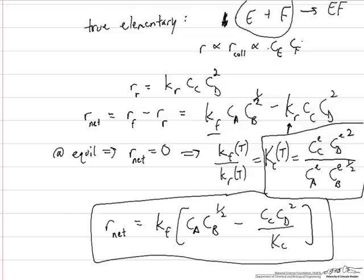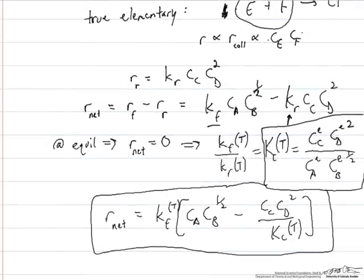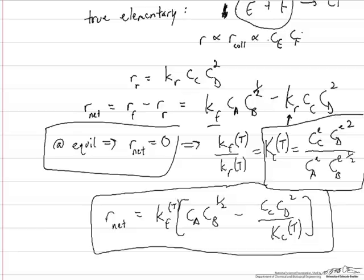One important feature of this expression is that the net rate of reaction goes to zero as you approach equilibrium, which is exactly what we expect. This should be the case whether you have elementary or non-elementary kinetics. These rate constants are functions of temperature, and if your expression is thermodynamically consistent, the reaction rate must go to zero at equilibrium. Performing this equilibrium analysis to incorporate an equilibrium constant is useful because expressions that skip this step often fail to meet thermodynamic limitations — the rate does not go to zero at equilibrium conditions.